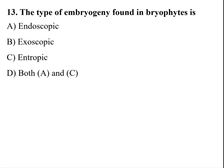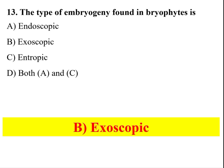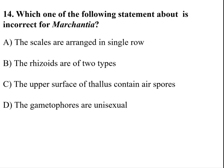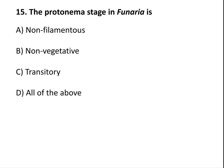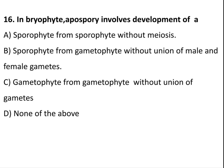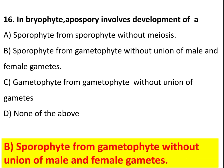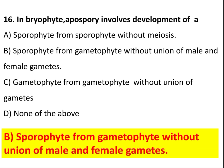The type of embryogeny found in bryophytes is exoscopic. The following statement is incorrect for Marchantia — the answer is A part: the scales are arranged in a single row. The protonema stage in Funaria is transitory. In bryophytes, apospory involves development of a sporophyte from gametophyte without union of male and female gametes.